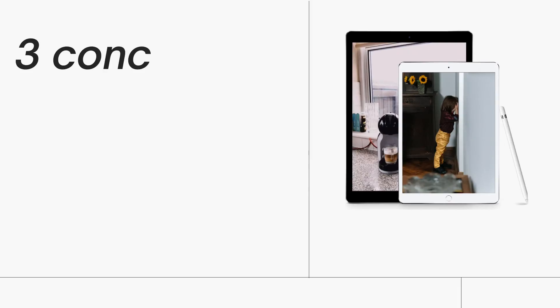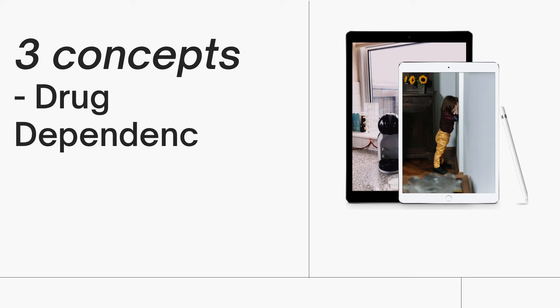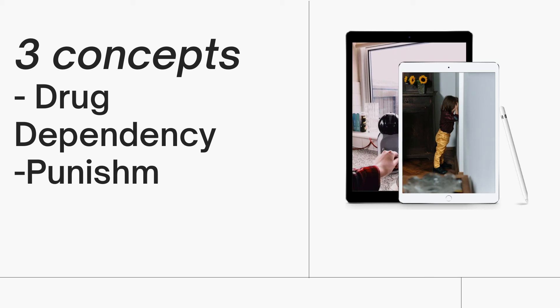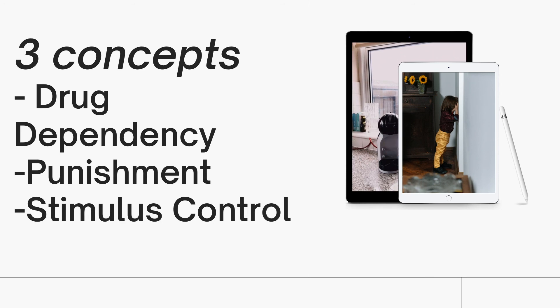That is the end of my video. To reiterate what we went over: the three concepts of drug dependency, punishment, and stimulus control — all included in Chapter 5: Learning.